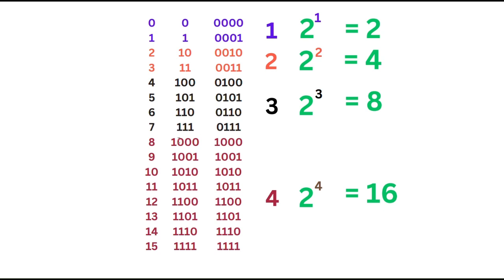The rule is: when I consume all possible permutation combinations of binary numbers with a specific number of bits, I have to increase the bit count to continue counting. Notice that the binary number 100 looks like 'one hundred' in decimal, but in binary it actually represents the number 4 — or actually the fifth count since we start from zero.